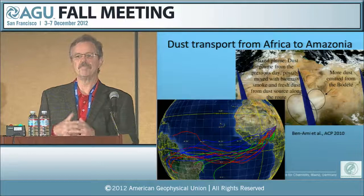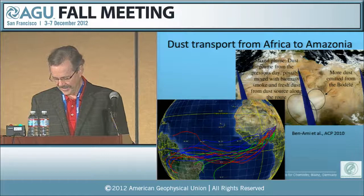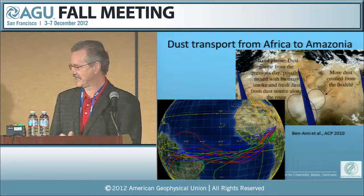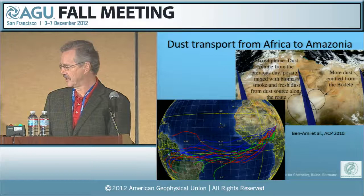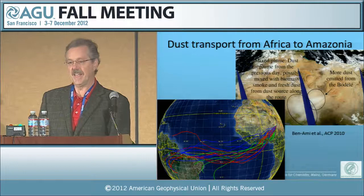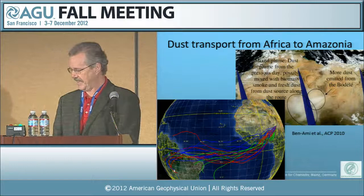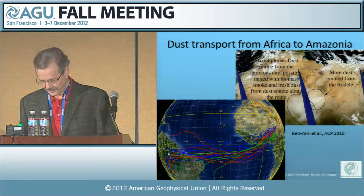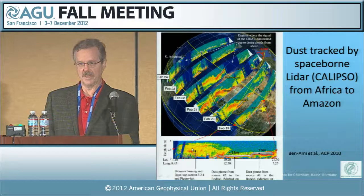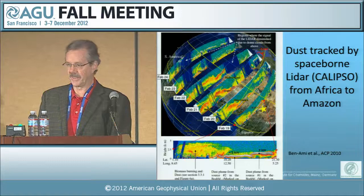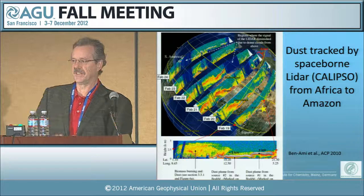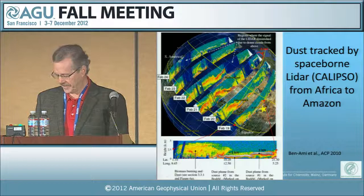There is a mechanism — this is like a crime case where you ask: was there a motive and was there a means? Yes, there is a means: transport from the source regions in Africa. Dust is blown out of the Baudelaire Depression, trajectories cross the Atlantic, and they end up in Manaus on the other side. It's also been shown for single events using space-borne LIDAR (Calypso) that one can trace a specific plume of dust across the Atlantic from one side to the other. So there is definitely both a motive and a means.